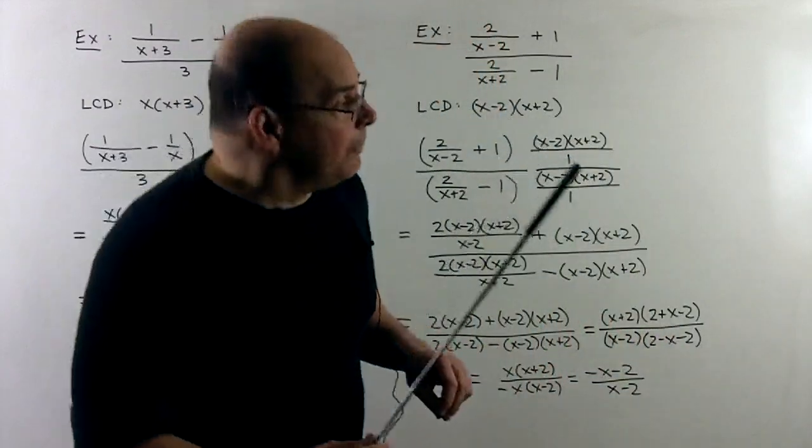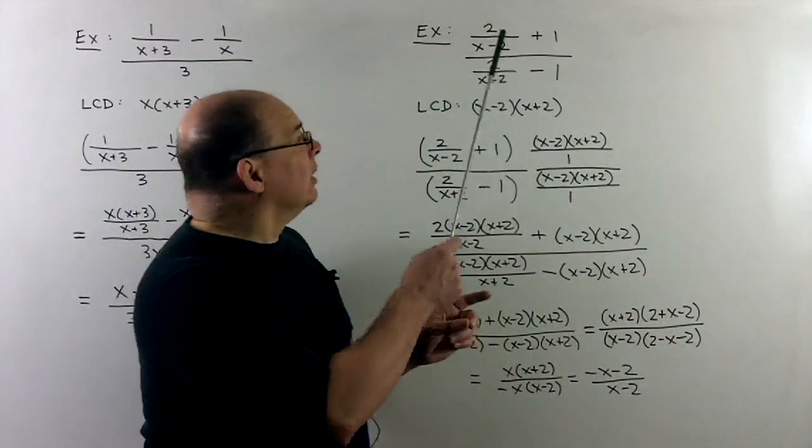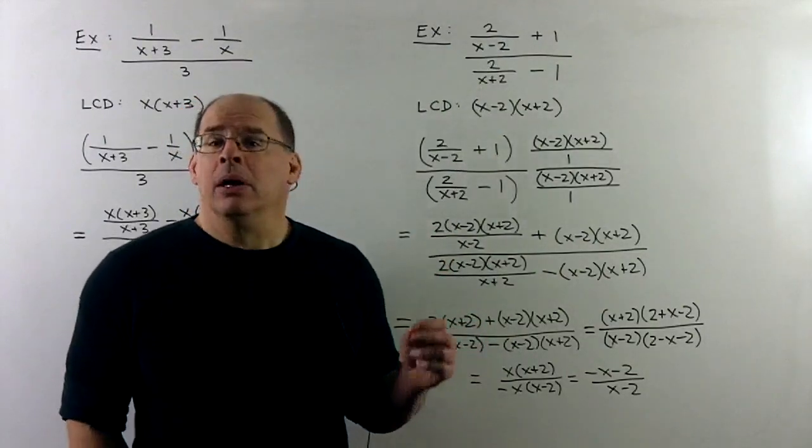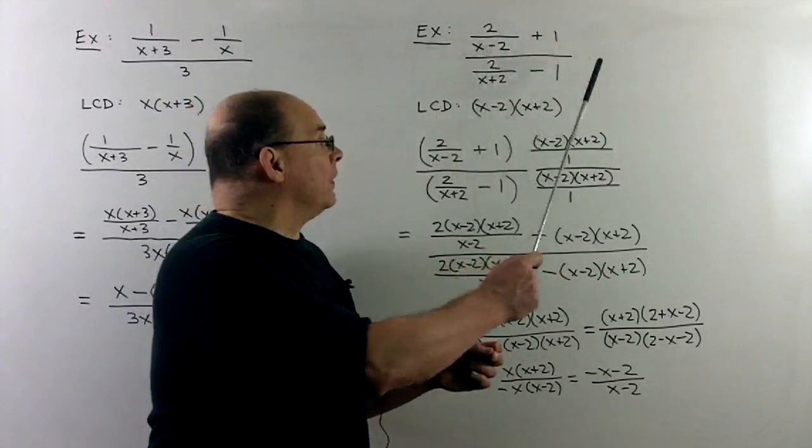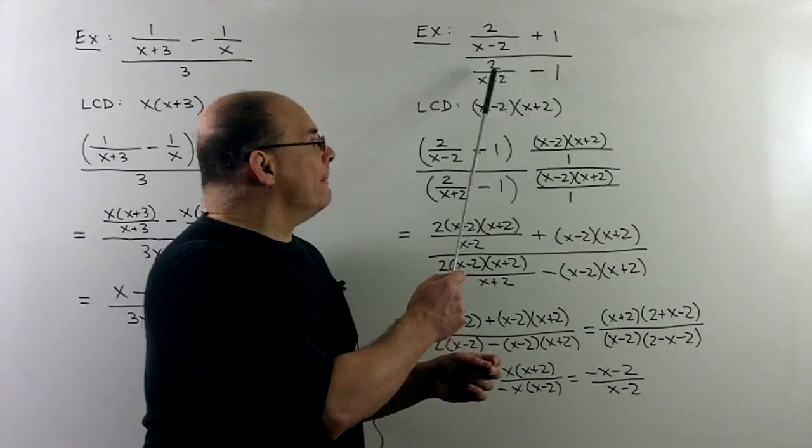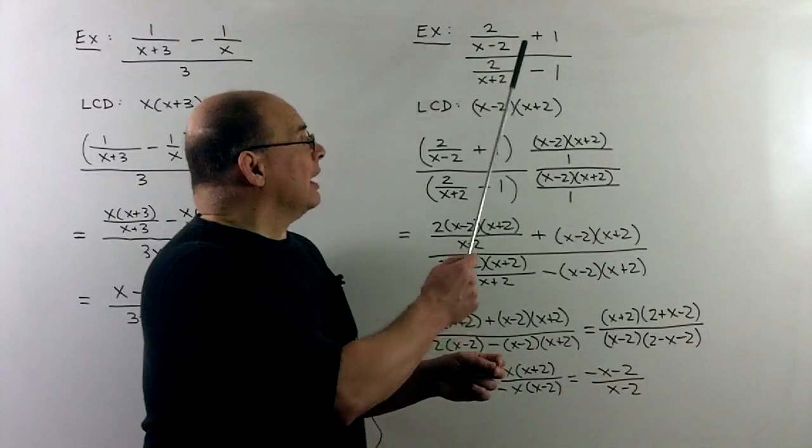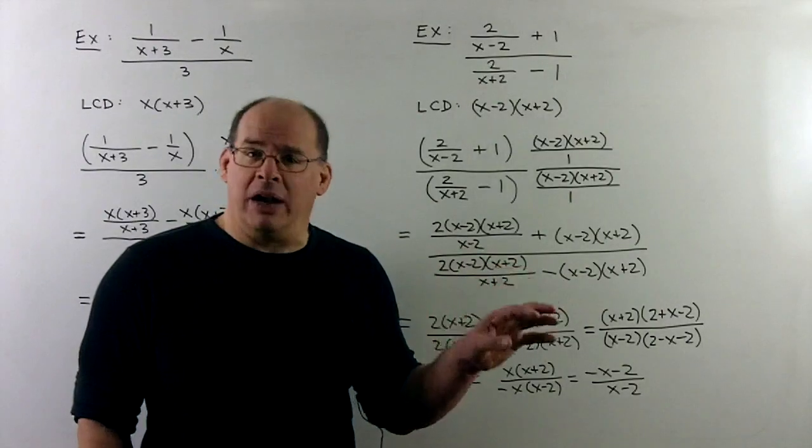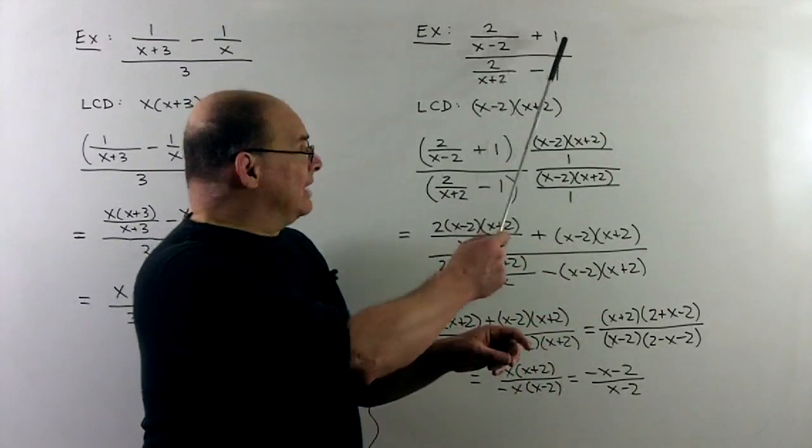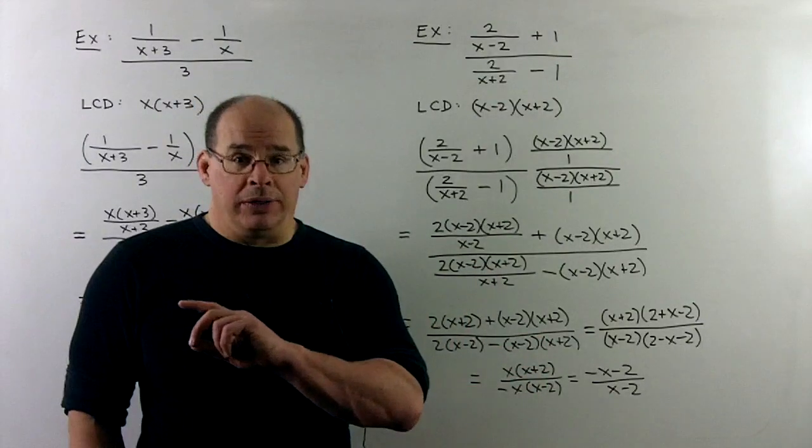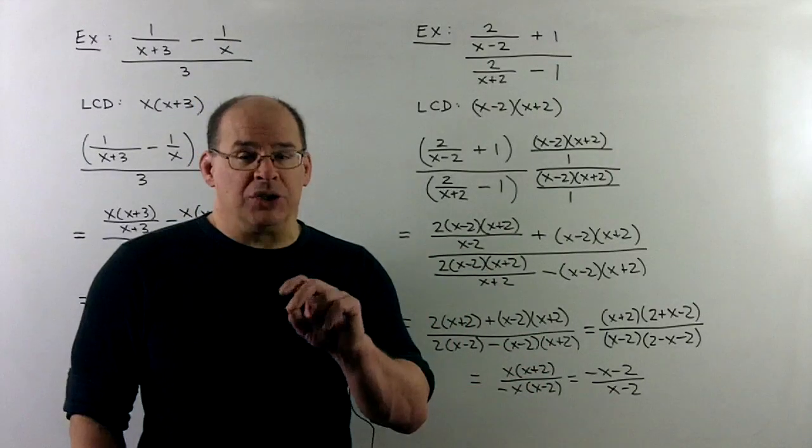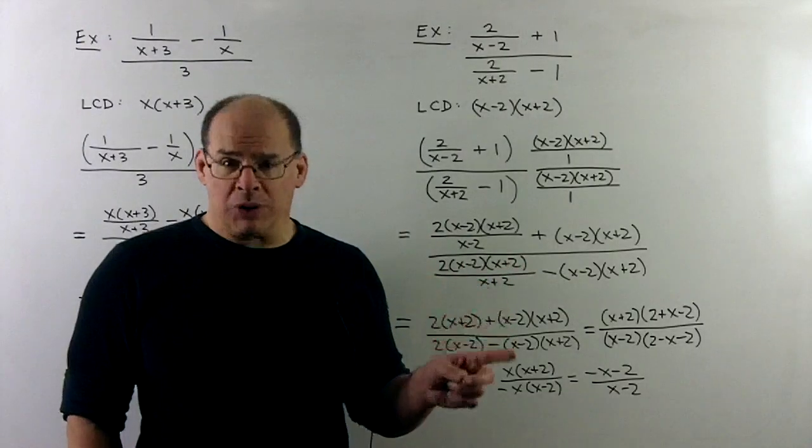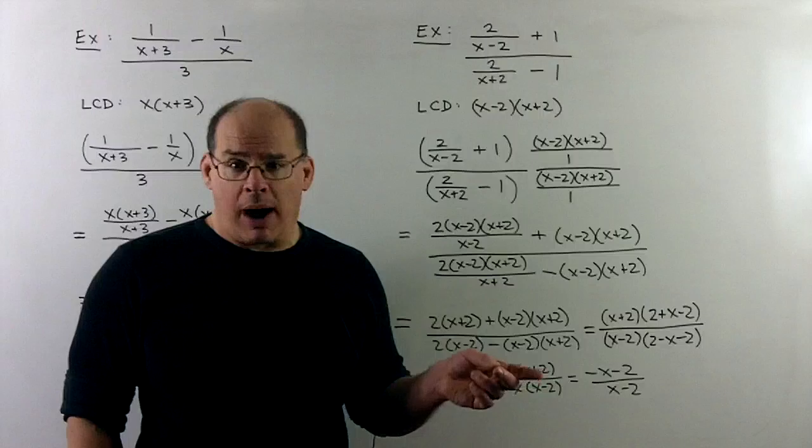Similar example. So here, what do we have? 2 over x minus 2 plus 1, whole thing over 2 over x plus 2 minus 1. Now, we've got mixed terms here. We've got part fraction and then whole number adding together. Same idea as with the previous example. We just use LCD or LCD over 1 where it works better. But they're equal, so no problem.